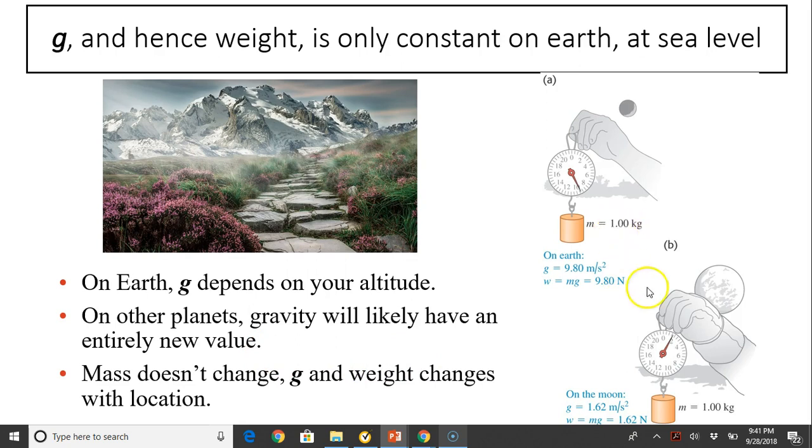Take a look at this picture. This is a mass of 1 kg weighing on Earth, which gives you 9.8 newtons. You bring the same mass on the moon, you will have 1.62 newtons. So their weight is different because the location is different. In both cases, mass does not change, but g and weight changes with location.